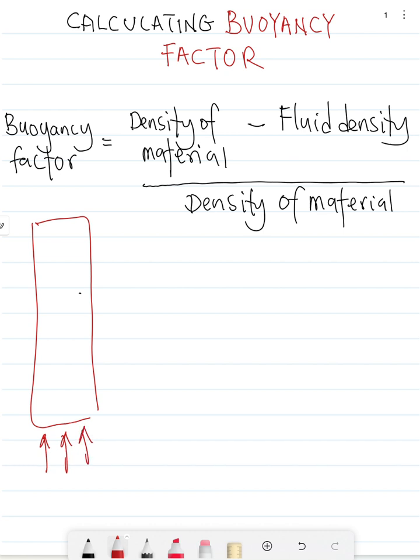Remember Archimedes' principle. So that's pretty much what a buoyancy factor is - a dimensionless number that quantifies how much that solid's weight is reduced in the fluid.